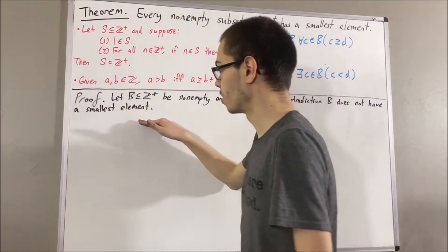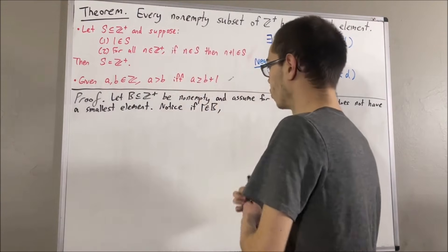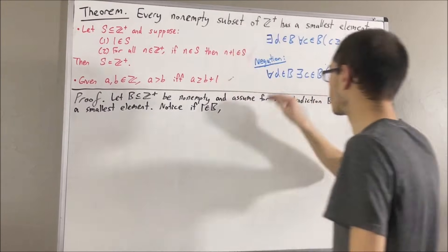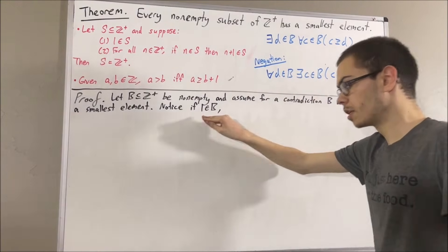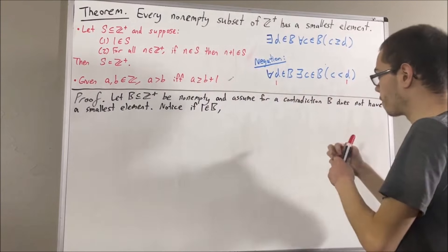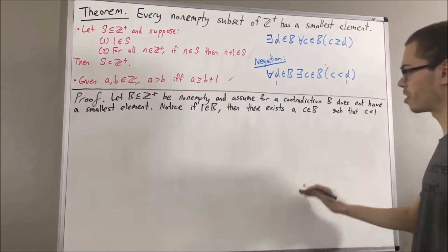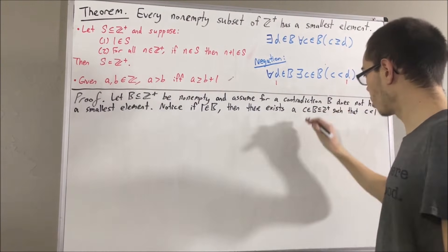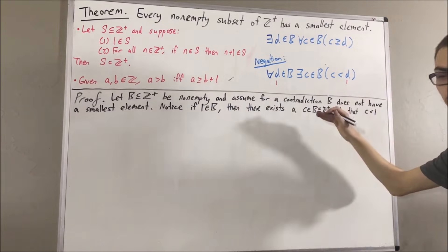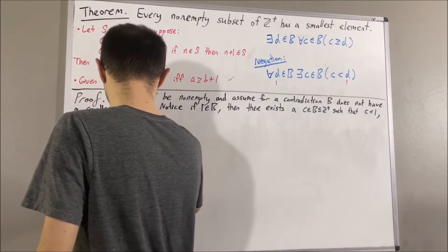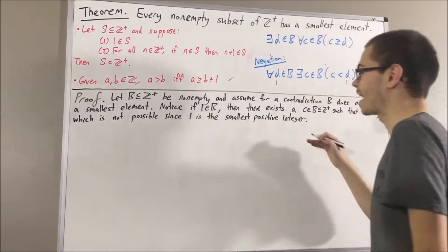Now, with this assumption, we must have that 1 is not an element of B. Because what happens if 1 is an element of B? Well, since we're assuming B does not have a smallest element, this statement works for every element of B, so in particular it must work for 1. Taking d to be 1, we have that there exists an element c in B such that c is less than 1. But B is a subset of the positive integers, so c is a positive integer that is less than 1. This clearly isn't possible because 1 is the smallest positive integer — there is no positive integer less than 1. So we can't have that 1 is an element of B; we must instead have that 1 is not an element of B.